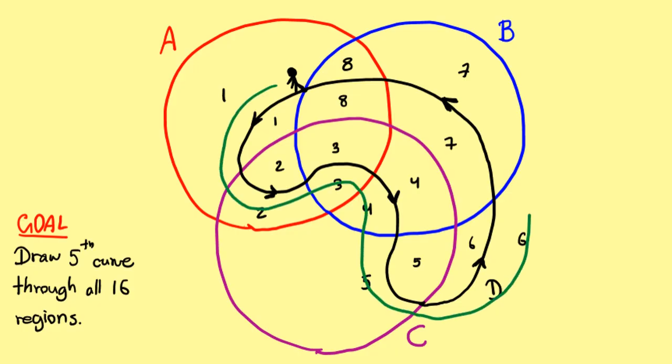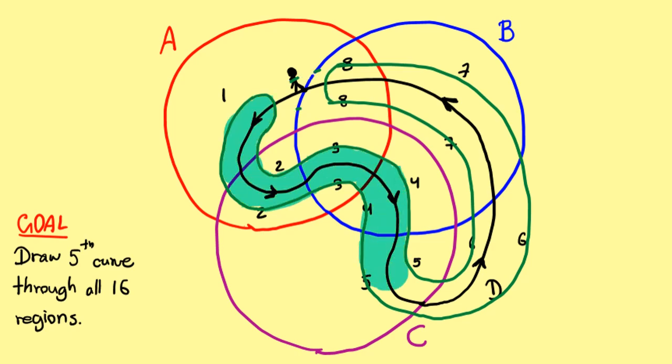If we enlarge our 4th curve just a little bit, we get a curve that cuts through all 8 regions on your right. Likewise, if we shrink our curve just a little bit, we get a curve that cuts through all 8 regions on your left. Then, all we need to do is combine these two curves at the starting point. Like this. You can easily check that this new curve cuts through all the 16 regions into 2 pieces.